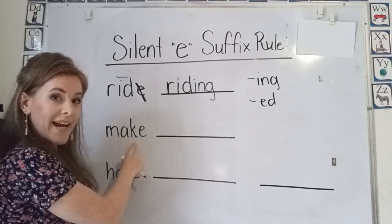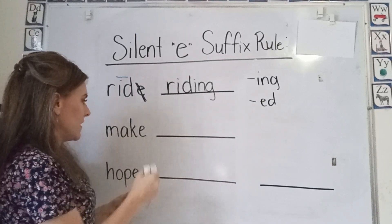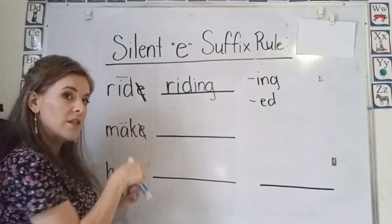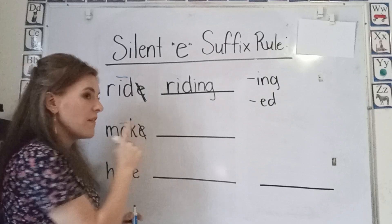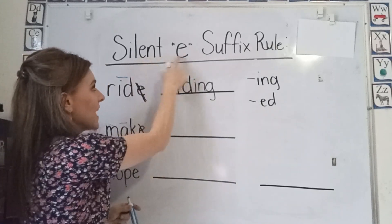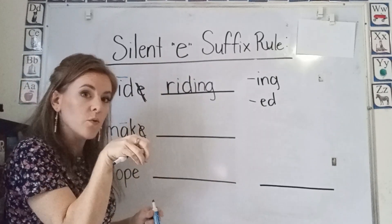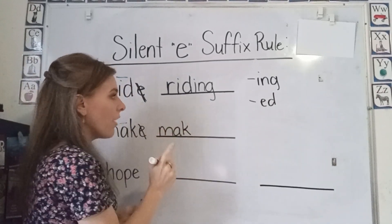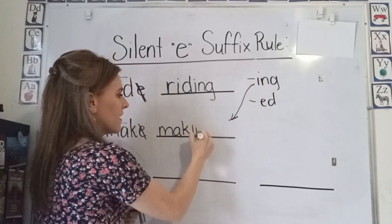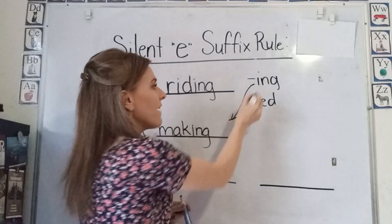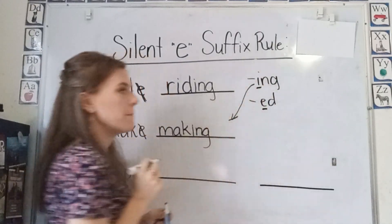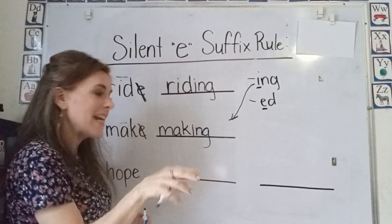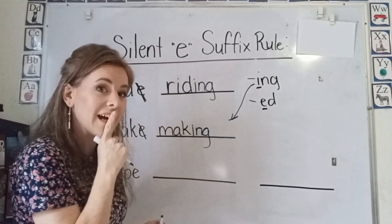Now here we have 'make.' This is a silent e — we have the two vowels, the first vowel is long and the second vowel is silent. So since we have a silent e, we're going to drop the e before adding our suffix that begins with a vowel. Making — we drop the silent e.